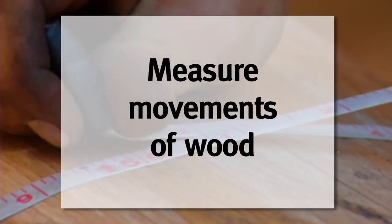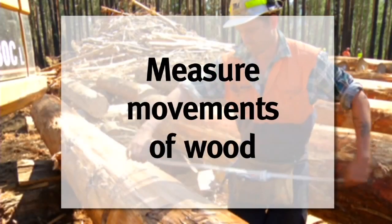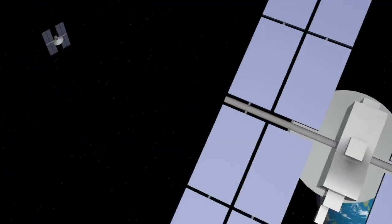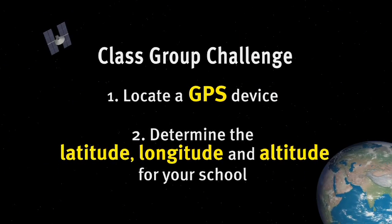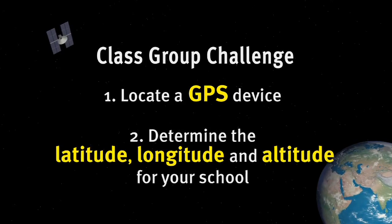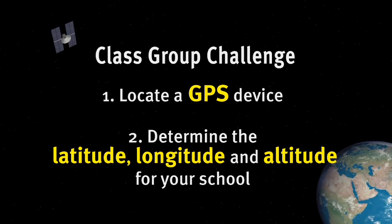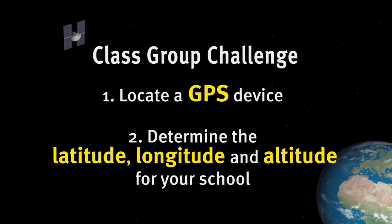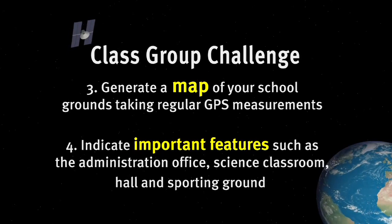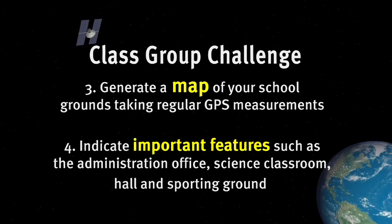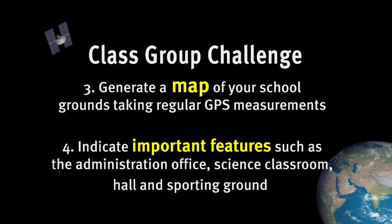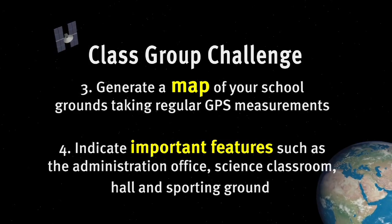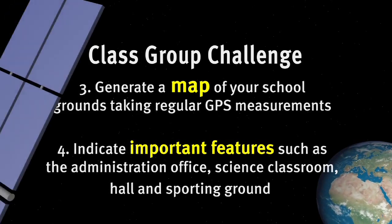Being able to accurately measure the point of production and movements of wood helps foresters to plan and manage the forests more effectively. As a class group challenge, see if you can locate a GPS device and have a go at determining the latitude, longitude and altitude for your school. You might like to generate a map of your school grounds, taking regular GPS measurements that indicate important features such as the administration office, your science classroom, hall and sporting field. Enjoy the challenge and good luck.